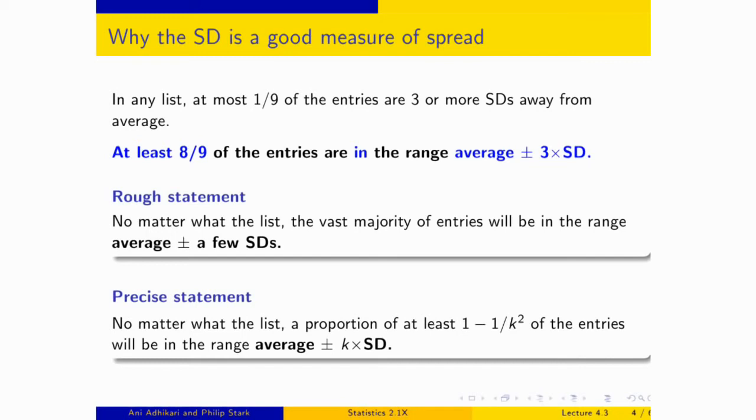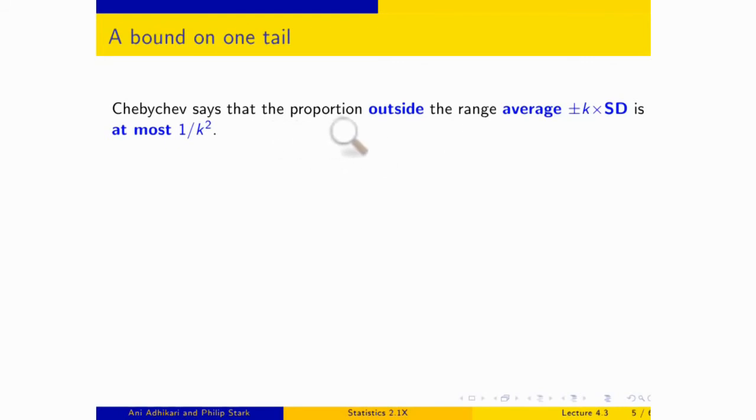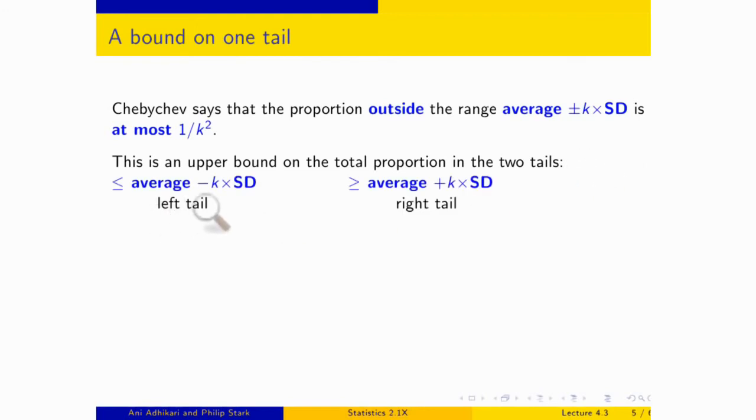For now, what I'd like to do is examine Chebyshev's inequality and what it says for one tail and not two. So just to recall, it says if you go k SDs away from the average on either side, then the total in the two tails is at most one over k squared. So it's an upper bound, and it's on a total proportion in two tails, and what are the two tails? Well, the left tail starts at the average minus k SDs, and you go take everything that's less than that. The right tail starts at the average plus k SDs, and you take everything that's greater than that. Greater than or equal to, I should say, and less than or equal to just to be precise.